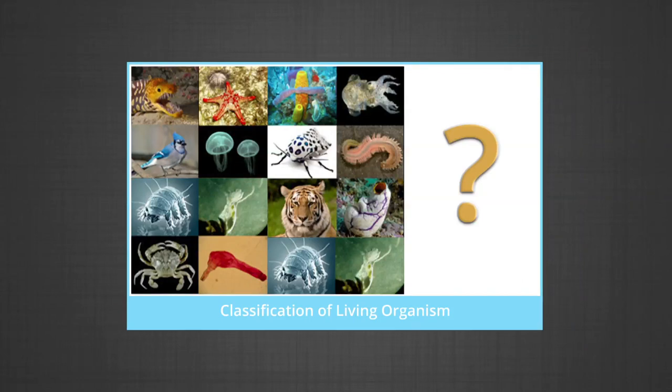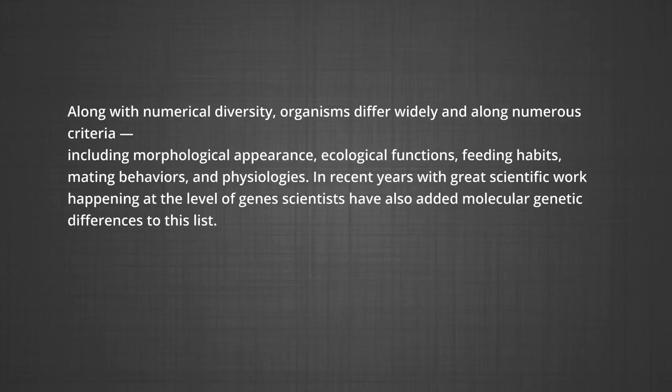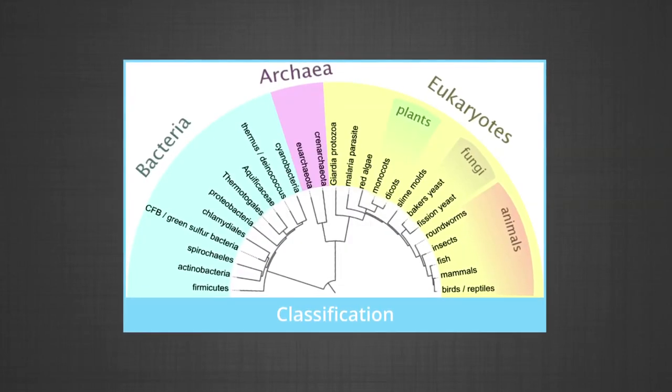Classification of living organisms: the diversity of living organisms on Earth is remarkable. Humans have come up with ways of organizing and classifying biological diversity throughout human history. Though taxonomists have been successful in describing about a million species, many millions are yet to be described. Along with numerical diversity, organisms differ widely along numerous criteria, including morphological appearances, ecological functions, feeding habits, mating behaviors, and physiologies. In recent years, with great scientific work happening at the level of genes, scientists have also added molecular genetic differences to this list.